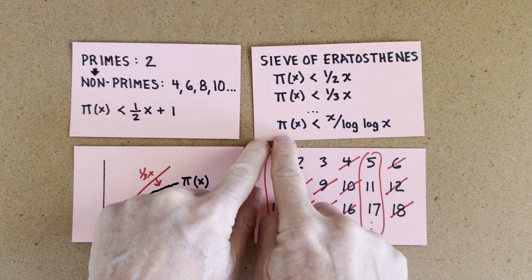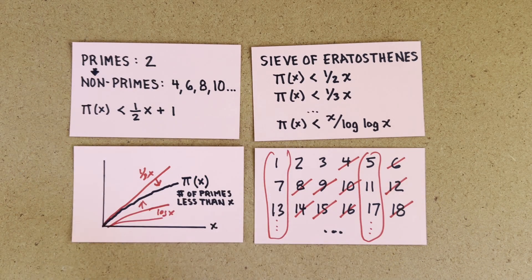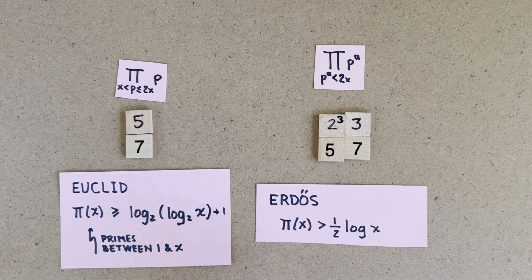Spoiler alert, sieving out the first log x primes gives us this, and the proof works without even knowing what those primes are. Okay, our bounds so far are pretty bad. Everybody knows there's way more than 4 primes between 1 and 100.